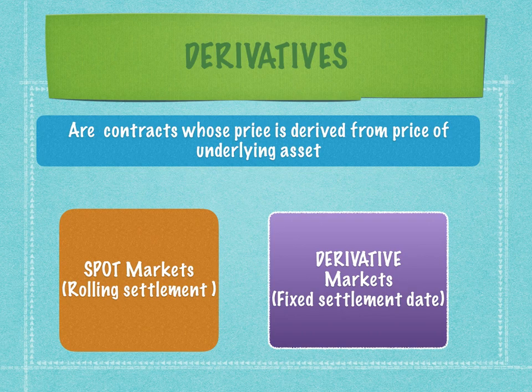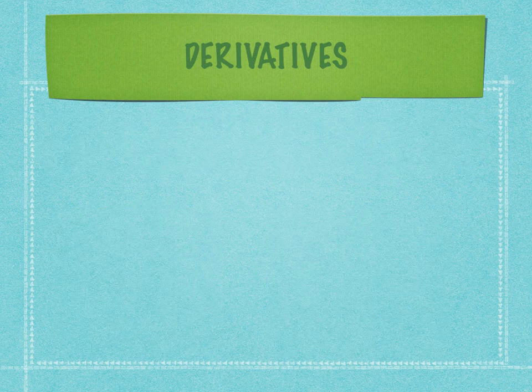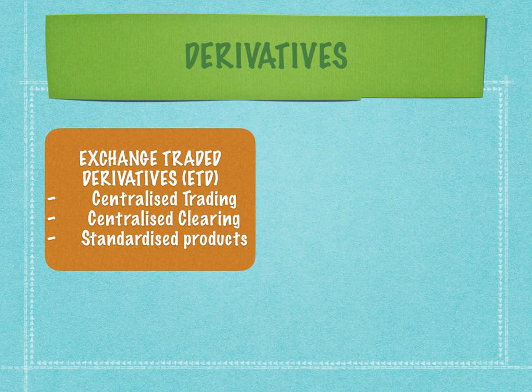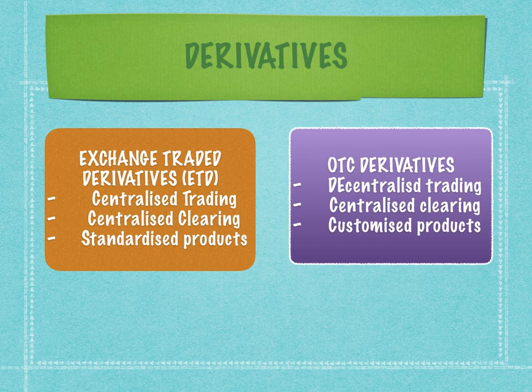The settlement date in exchange traded products is called expiry; in OTC products it is called the settlement date or value date. Derivatives can be of two types traded in two different segments exclusive to each other: ETDs — exchange traded derivatives — and OTC derivatives. ETDs feature centralized trading, centralized clearing, standardized products, and standardized settlement procedures, as seen on exchanges like the National Stock Exchange.